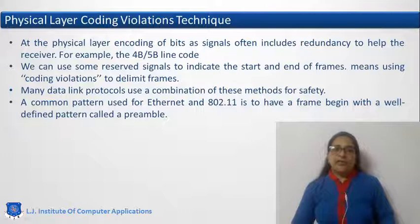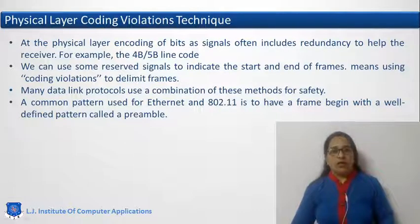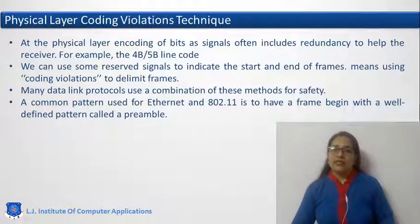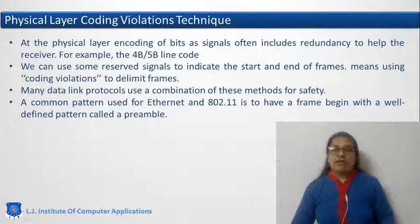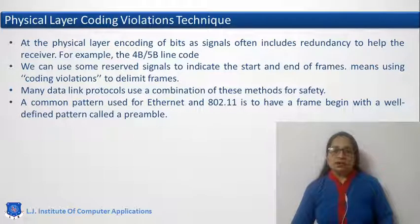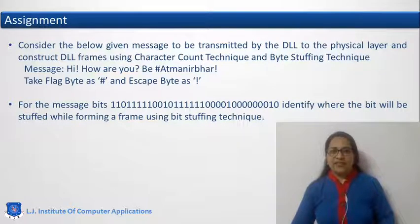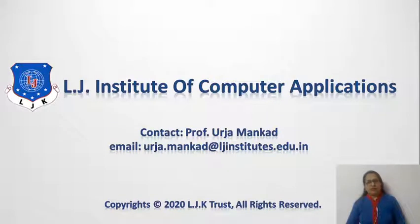There are many techniques used by the data link layer to identify the start and end of the frame. As we have seen at the physical layer, different coding mechanisms like the 4B/5B line code keep certain bit sequences reserved, and those bit sequences can also be used by the data link layer to indicate the start and end of a frame. Many data link layers use a combination of different techniques. For example, 802.11 wireless LAN uses a special bit sequence called a preamble bit sequence to indicate the start of the frame. Please try the given examples to make your concepts more clear. If you have any doubts, feel free to contact me. See you in the next session.